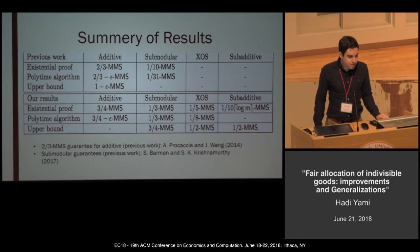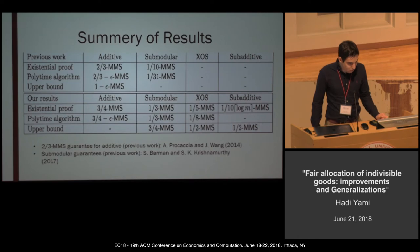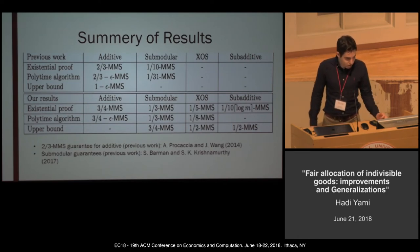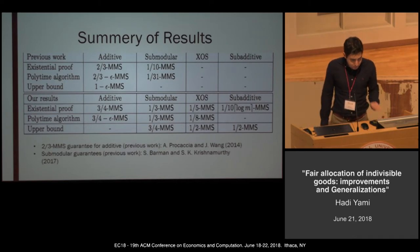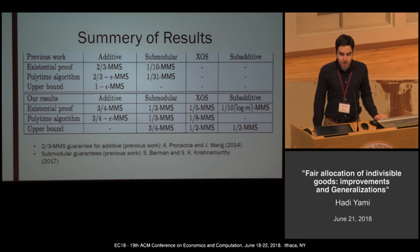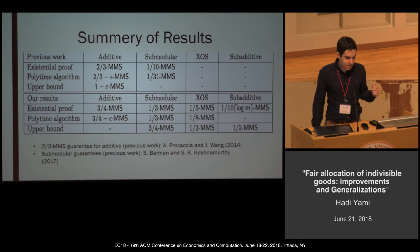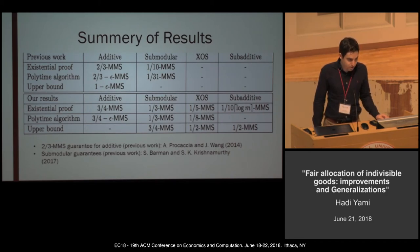Here is a summary of our results. For the additive case, previous work achieved two-thirds MMS; we improved it to three-quarters. For the sub-modular case, Barman and Krishnamurti gave the first constant approximation: one-tenth existential and one-thirty-first polynomial time. We improved their result to one-third and also provided a counter-example showing three-quarters MMS is not always achievable for sub-modular. Notably, the counter-example for the additive setting is currently one minus epsilon. For XOS and sub-additive settings, there was no prior work; we gave constant results for XOS and an order of one-over-log-m approximation for sub-additive.